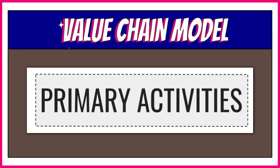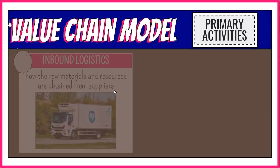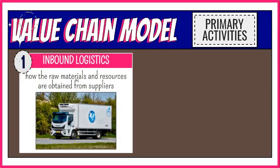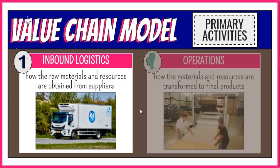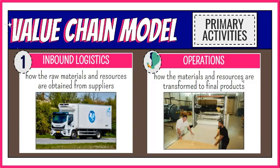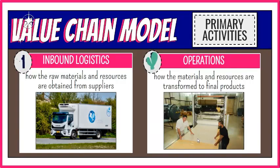Let's now talk about the five primary activities. First, inbound logistics — this is how the raw materials and resources are obtained from suppliers. In this activity, we determine and analyze the shipping costs from the supplier's location to the company's facility. Second, operations — this is how the materials and resources are produced, resulting in a product or service. This includes all the value-creating activities that transform inputs into what the company is offering. In this activity, we identify and analyze the cost of running the warehouse and equipment or machinery.